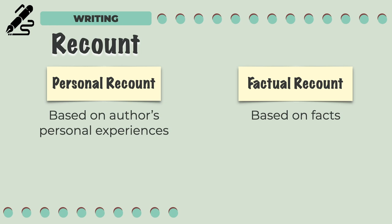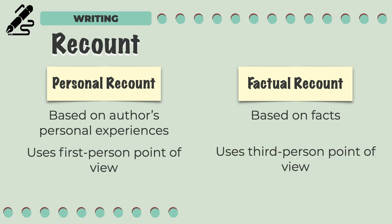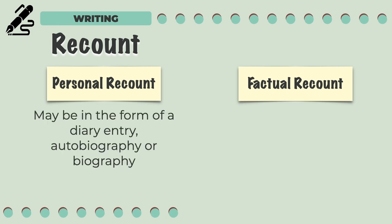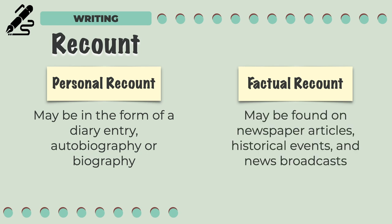Since a personal recount is subjective, it uses a first-person point of view. And since a factual recount must appear unbiased, it uses a third-person point of view. Personal recounts may take the form of a diary, autobiography, or biography, while factual recounts may be found in newspaper articles, historical events, and news broadcasts.